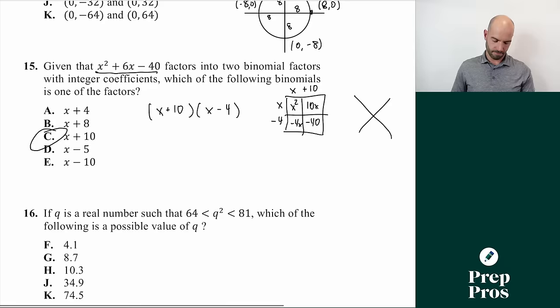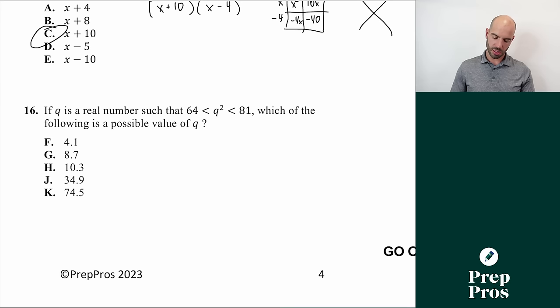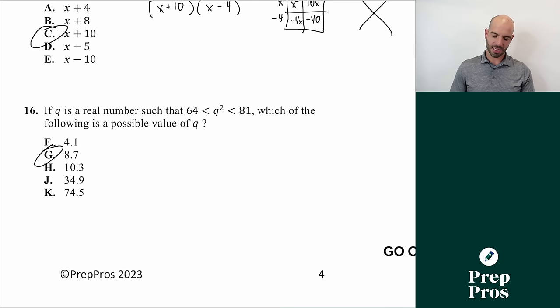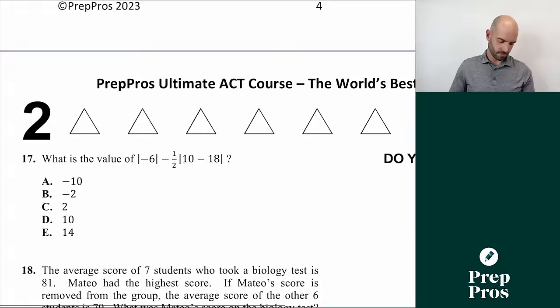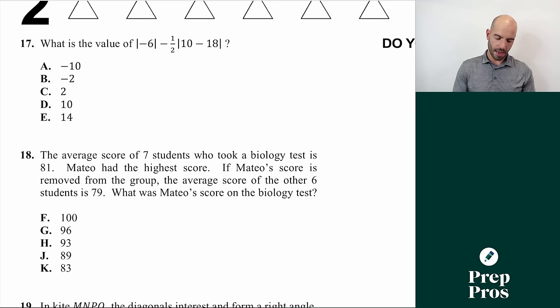Number sixteen: Q is a real number such that 64 is less than Q squared is less than 81. Two ways to solve this — back solve with the answer choices, or recognize that 64 equals 8² and 81 equals 9², so Q must be between 8 and 9. The only answer choice between 8 and 9 is 8.7, so the answer is G. Number seventeen: evaluate the absolute value expression. Absolute value of -6 is 6, minus one half of the absolute value of (10 minus 18). Since 10 minus 18 is -8, its absolute value is 8, and one half of 8 is 4. So 6 minus 4 equals 2. The answer is C.